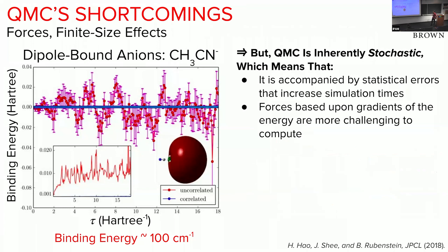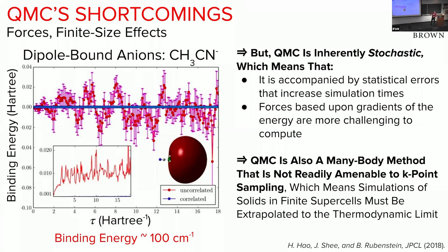There are a couple of issues with QMC — some good, some bad. QMC is inherently stochastic, which we celebrate for bringing down our scaling. But that also means it has large statistical error bars, and you have to simulate to long times to bring them down. It also has issues calculating forces, since you have to take gradients of the energy, and for 20 or 30 years it's been challenging to compute those forces accurately and without bias. QMC is also not readily amenable to K-point sampling, which means we typically have to model things in larger and larger supercells to extrapolate to the thermodynamic limit.